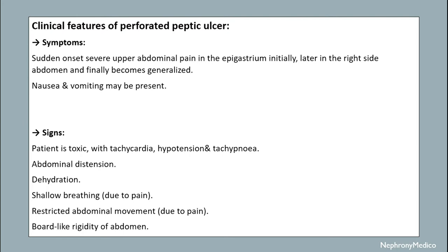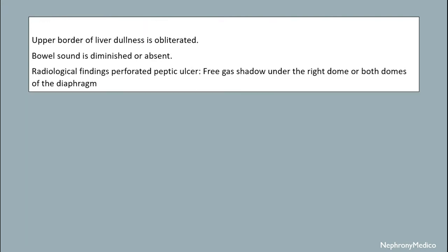Further signs include dehydration, shallow breathing, restricted abdominal movement, and board-like rigidity of the abdomen. The upper border of liver dullness is obliterated. Bowel sound is diminished or absent. Radiological findings of the perforated peptic ulcer show free gas shadow under the right or left dome of the diaphragm.